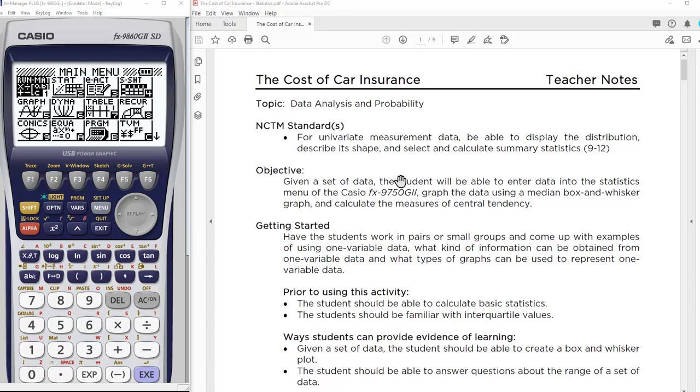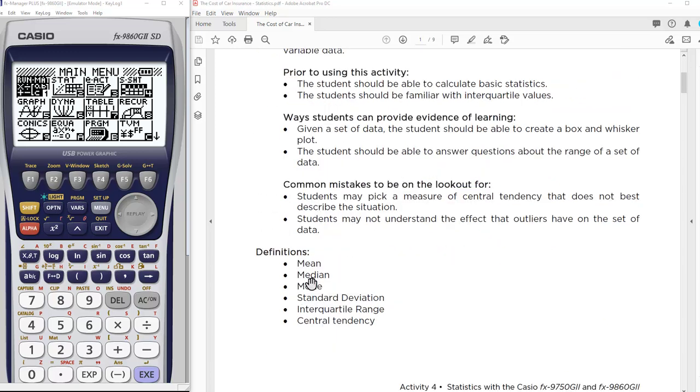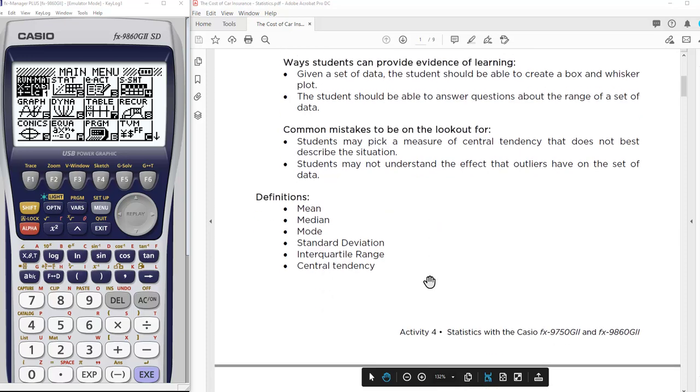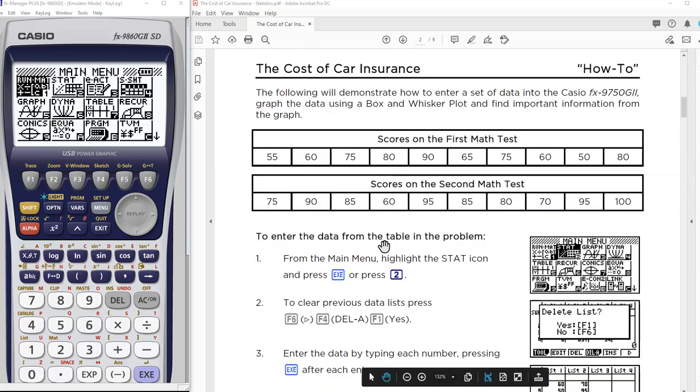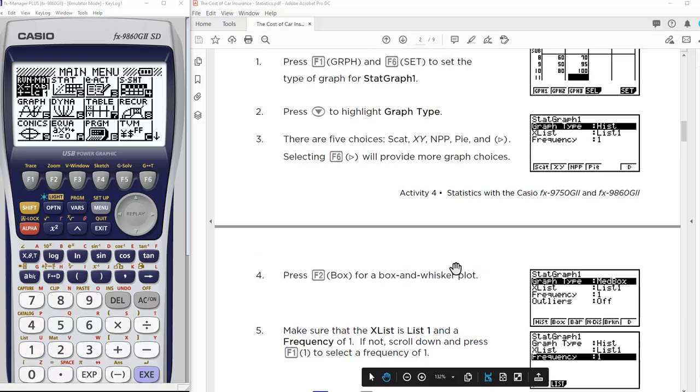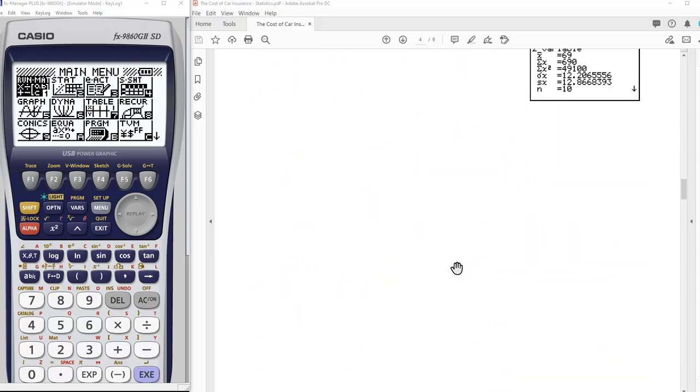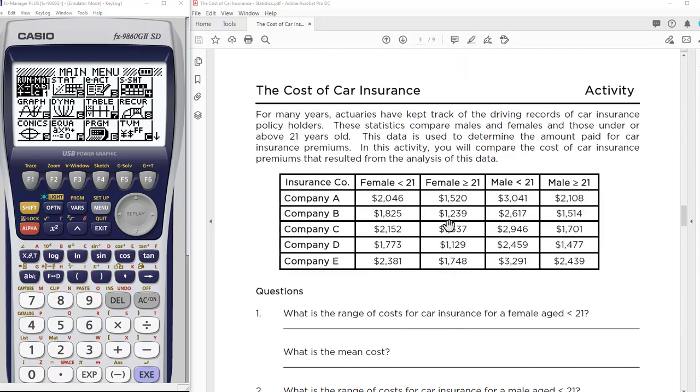This activity comes with standards and objectives. It's focused on statistics, measures of center, and specifically box plots. In the activity itself there are some how-tos which I'm going to skip over since that's what I'm showing. We're going to get right into the activity. The first thing students do is compare the cost of car insurance.